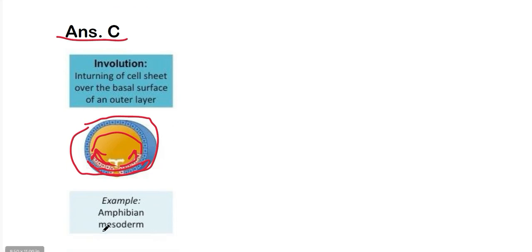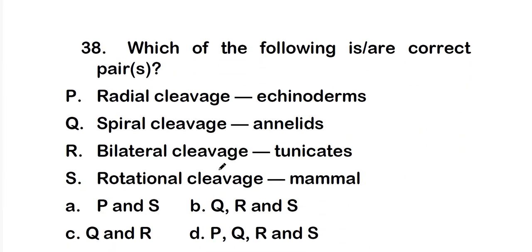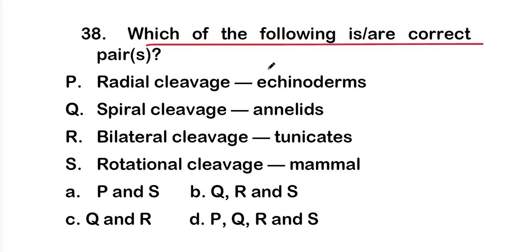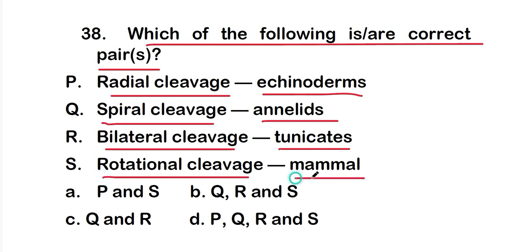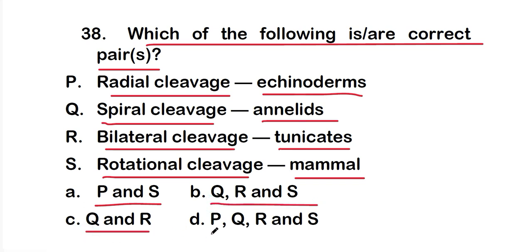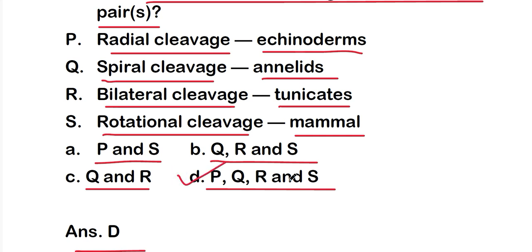Question 38: which of the following are correct pairs? P: radial cleavage — echinoderms; Q: spiral cleavage — annelids; R: bilateral cleavage — tunicates; S: rotational cleavage — mammals. Options are A: P and S; B: Q, R, S; C: Q and R; D: P, Q, R, S. The right answer is option D — all pairs P, Q, R, and S are correct.